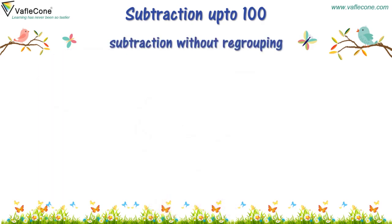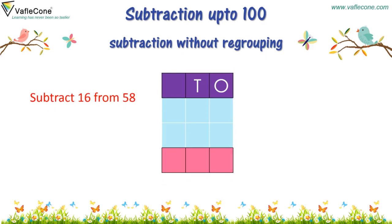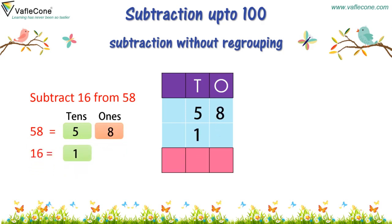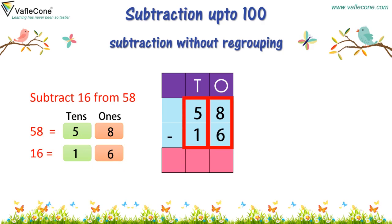Subtracting 16 from 58 works similarly. We need to place numbers as per their place value — that is 5 at the 10's place and 8 at the 1's. For 16, 1 at the 10's place and 6 at the 1's. Then subtracting numbers as per their place value. The answer is 42.